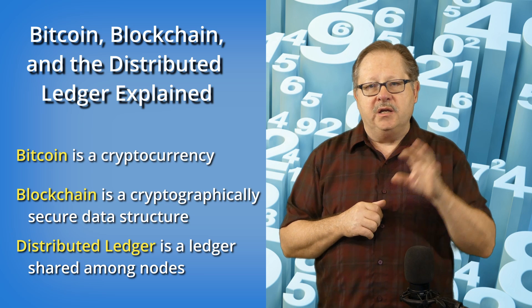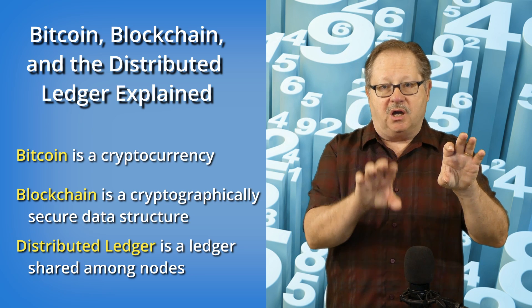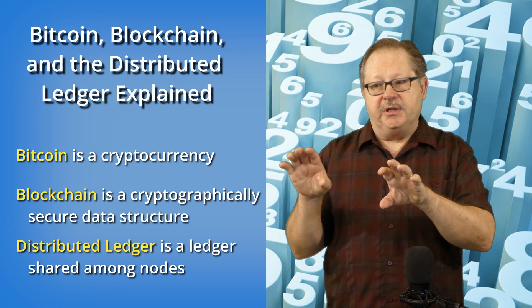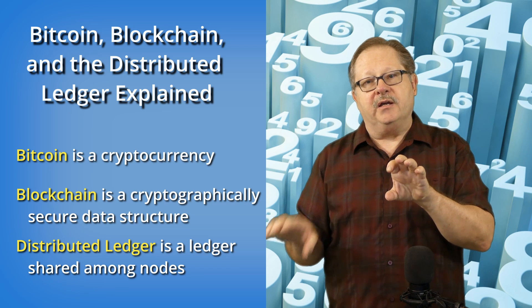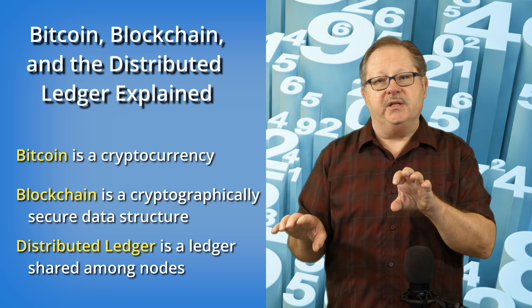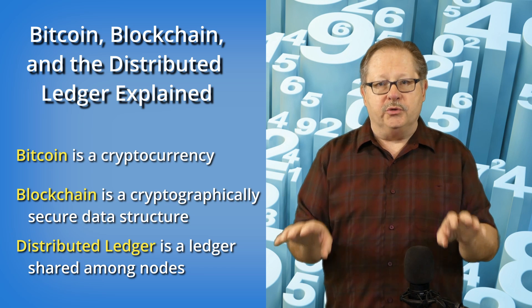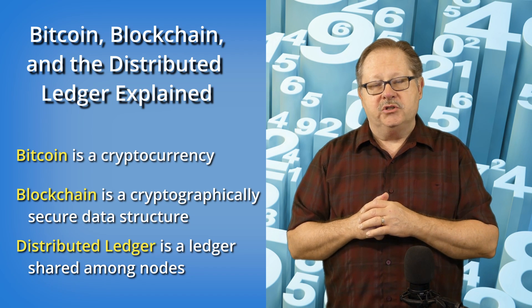That kind of gives you an idea of what the difference between those three entities are. Bitcoin is a currency built on Blockchain. Distributed Ledger is a component of Blockchain that helps it to be secure by distributing the data among all of the nodes on the network.